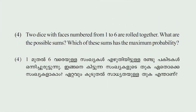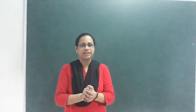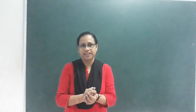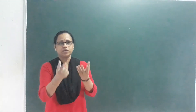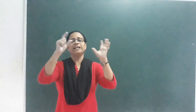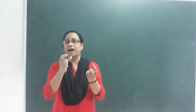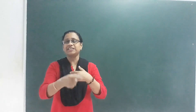New problem: Two dice with faces numbered 1 to 6 are rolled together. What are the possible sums? Which of these sums has the maximum probability? When two dice are tossed, each die can show faces 1 through 6.